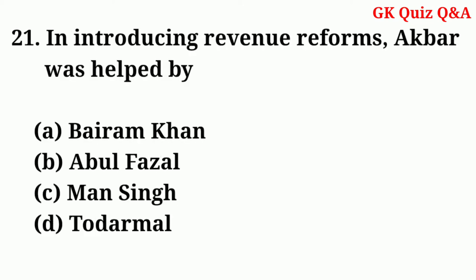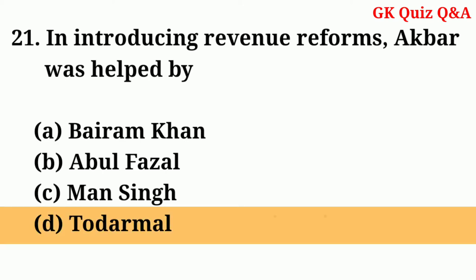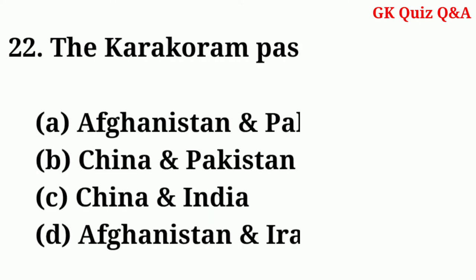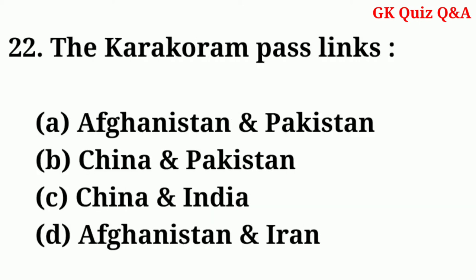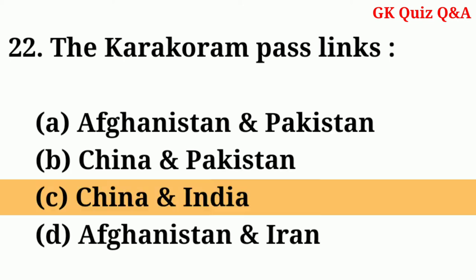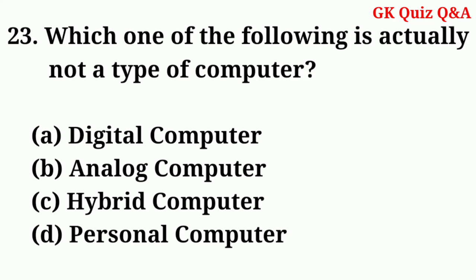In introducing revenue reforms, Akbar was helped by — Answer: D — Todar Mal. The Karakoram Pass links — Answer: C — China and India. Which one of the following is actually not a type of computer?